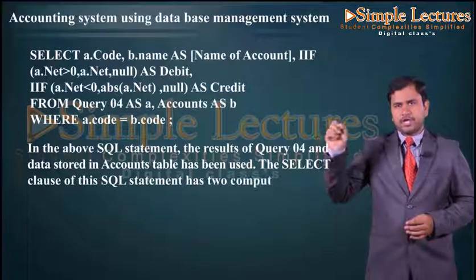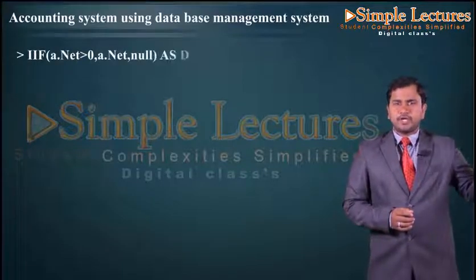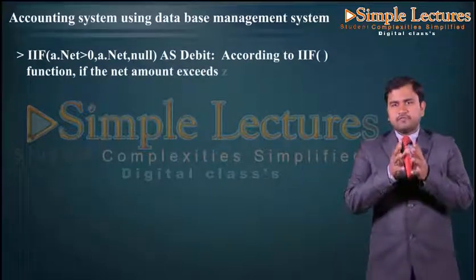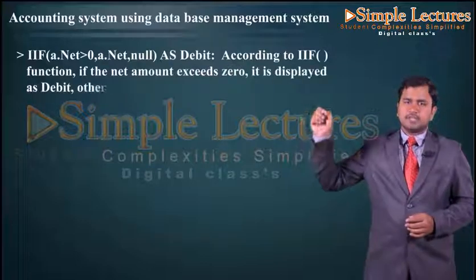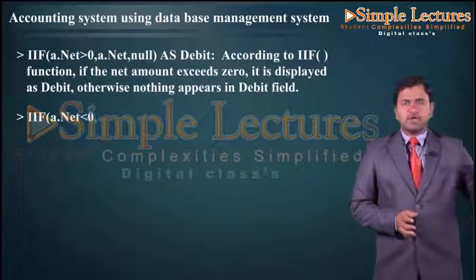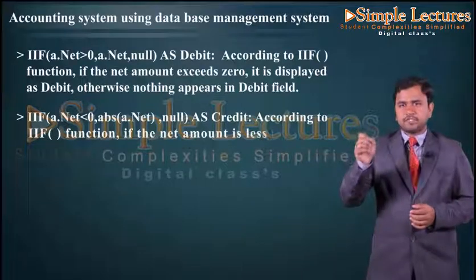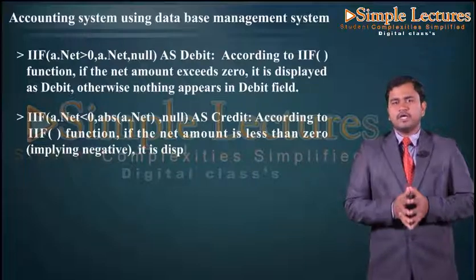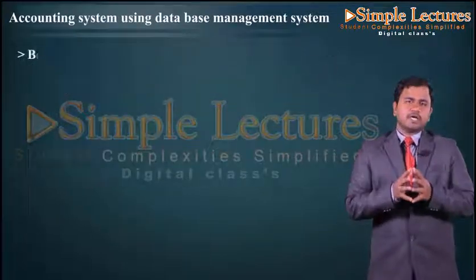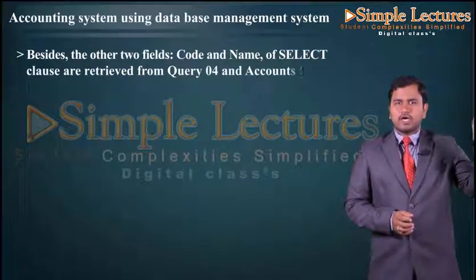The SELECT clause has two computed fields. According to the IIF function, if the net amount exceeds zero it is displayed as debit; otherwise nothing appears in the debit field. Similarly, if the net amount is less than zero (i.e., negative), its absolute value is displayed as credit; otherwise nothing appears in the credit field. Besides these two computed fields, code and name of account are retrieved from Query 04 and the accounts table respectively.